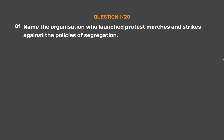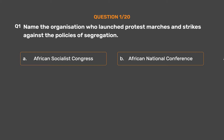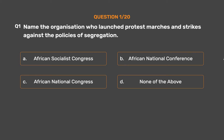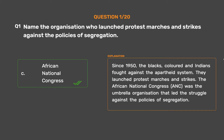Question 1: Name the organization who launched protest marches and strikes against the policies of segregation. Option A: African Socialist Congress. Option B: African National Conference. Option C: African National Congress. Option D: None of the above. The correct answer is Option C: African National Congress. Since 1950, the blacks, colored and Indians fought against the apartheid system. They launched protest marches and strikes. The African National Congress (ANC) was the umbrella organization that led the struggle against the policies of segregation.